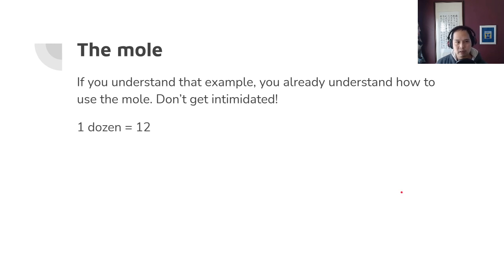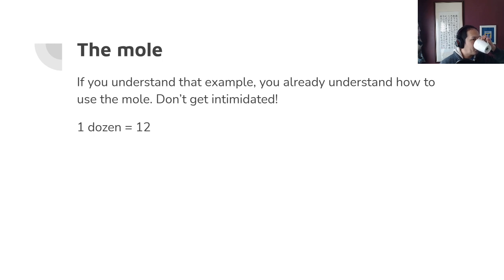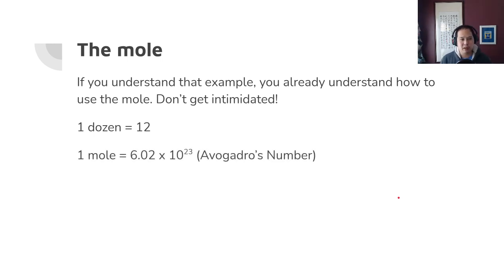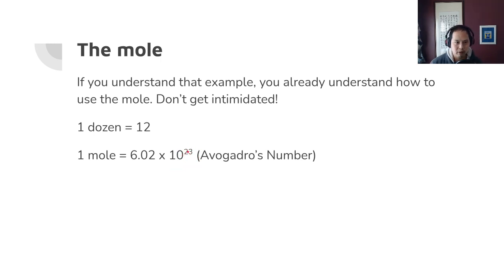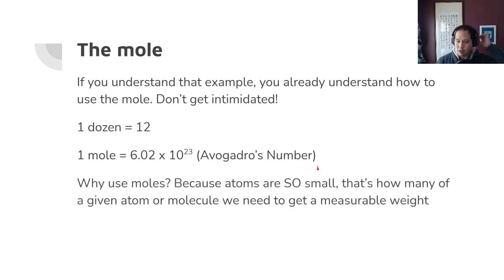You know that one dozen equals 12 — whether it's apples, people, or cups. For the mole, it's the same idea except instead of 12, it's 6.02 times 10 to the 23rd. This is called Avogadro's number. It's a huge number, but you don't need to be intimidated. You can just ignore the 10 to the 23rd and add it to the end of your answer.